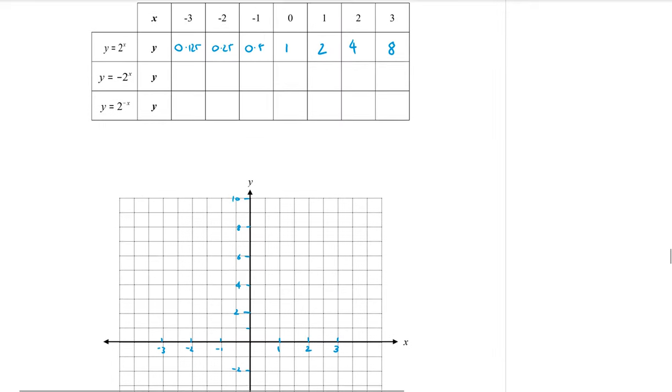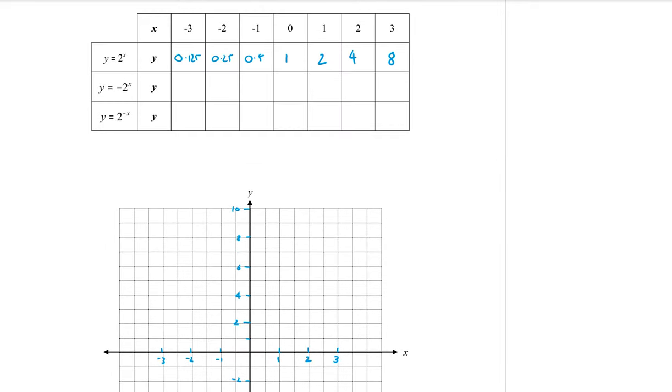So quickly drawing the y equals 2 to the x exponential. When x equals minus 3, we have 0.125. At minus 2 we're at 0.25, minus 1 we're at a half, at 0 we're at 1, at 1 we're at 2, at 2 we're at 4, and 3 we are at 8. So just like in example 1, there is our basic exponential shape, y equals 2 to the power of x.